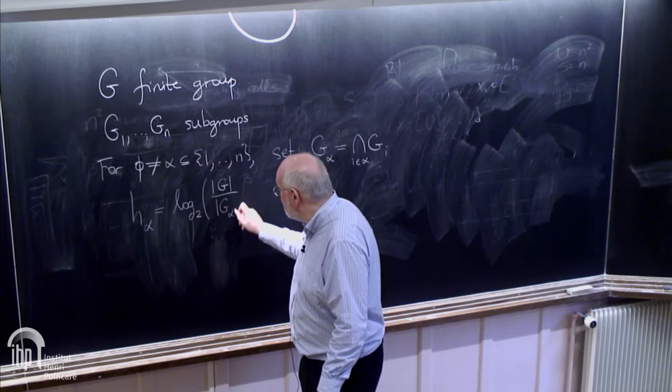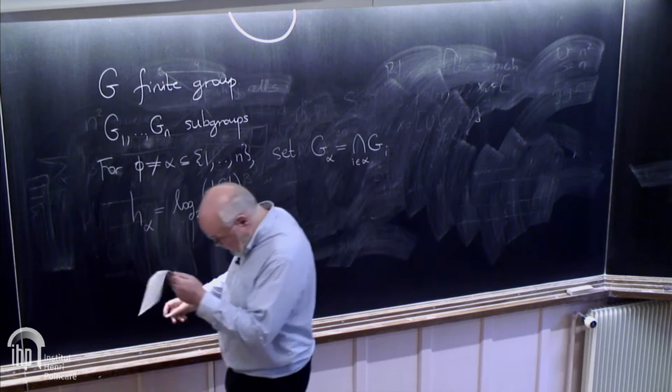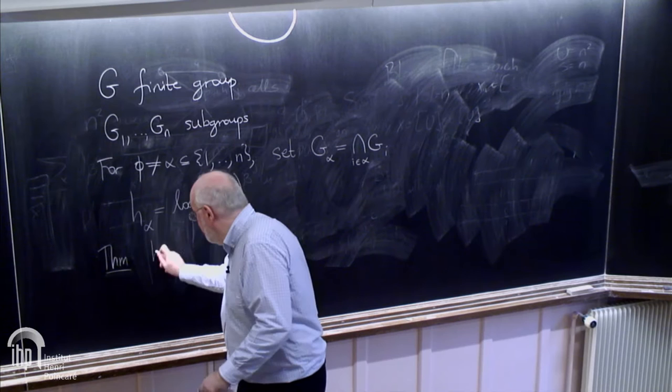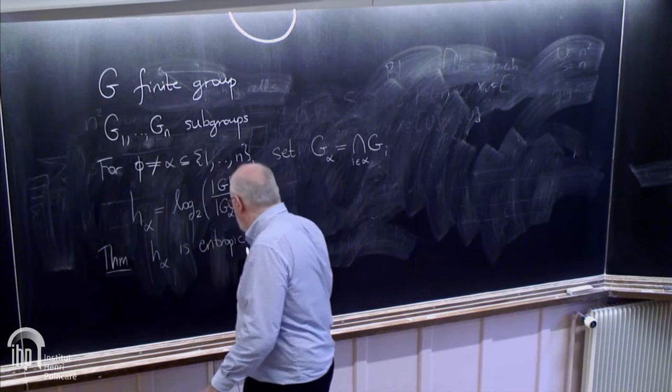For a non-empty subset of 1 through N, we can set G alpha to be the intersection of all the Gi for i in alpha. We can set H alpha to be log base 2 of the number of elements of G divided by the number of elements of G alpha. The amazing theorem by Chen and Young is that H alpha is entropic.